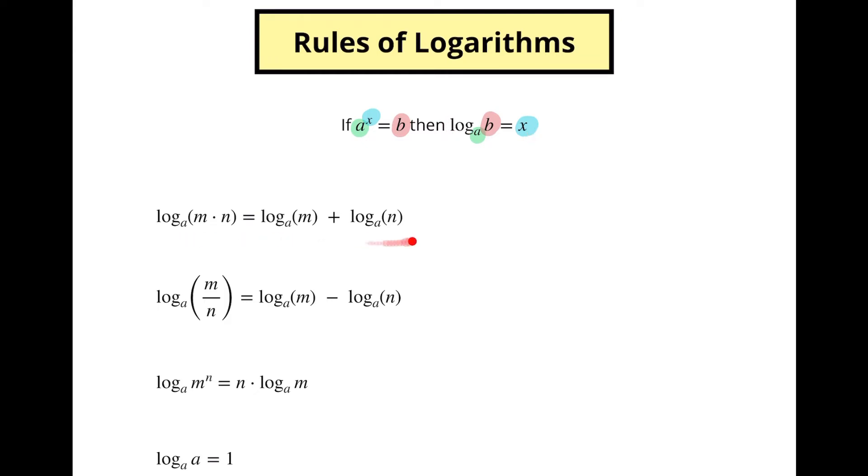So here we have our first rule. If we've got log base a of two numbers multiplied together, then that's going to be the same thing as adding each of those two things individually. That should look familiar.